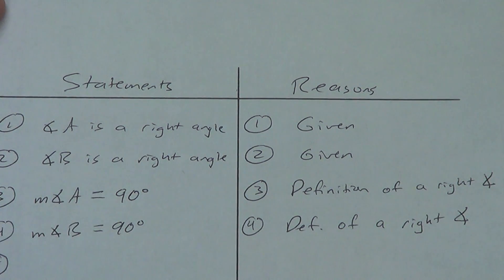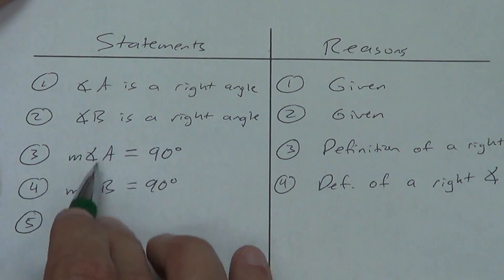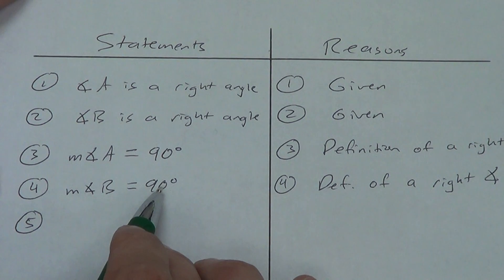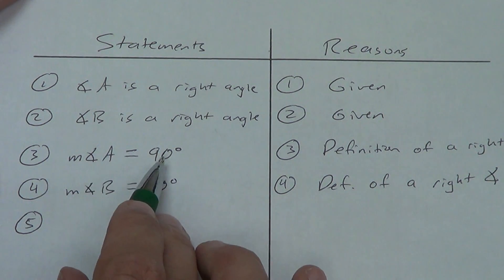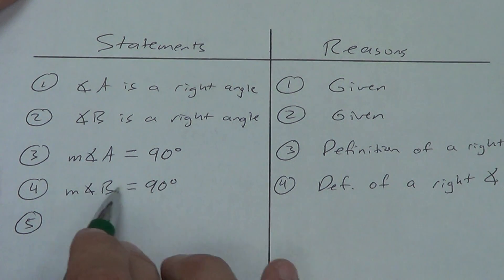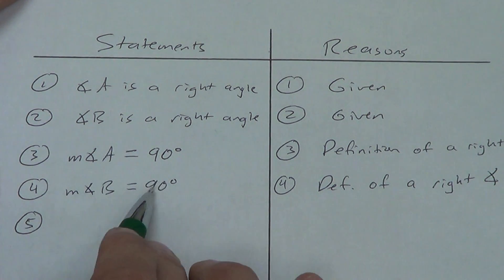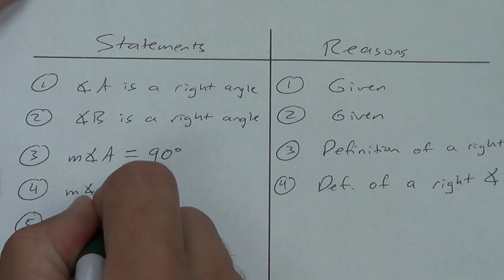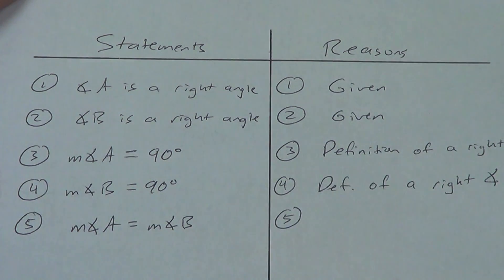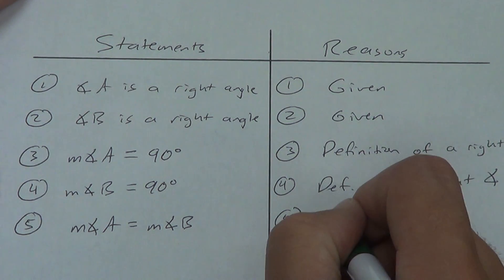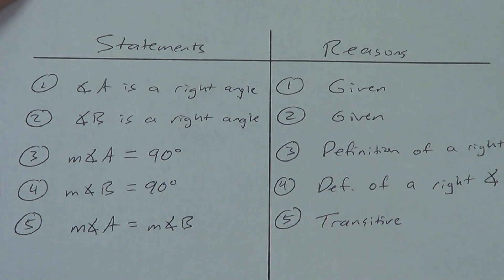Step five. Now we're not worried about the first two statements anymore. Notice these two — measure of angle A equals 90, and measure of angle B equals 90 — are the same value. So I can go from A to 90 to 90 to B, skipping the 90. So the measure of angle A equals the measure of angle B. What's that called when we skip something? Hopefully you remember: transitive property.